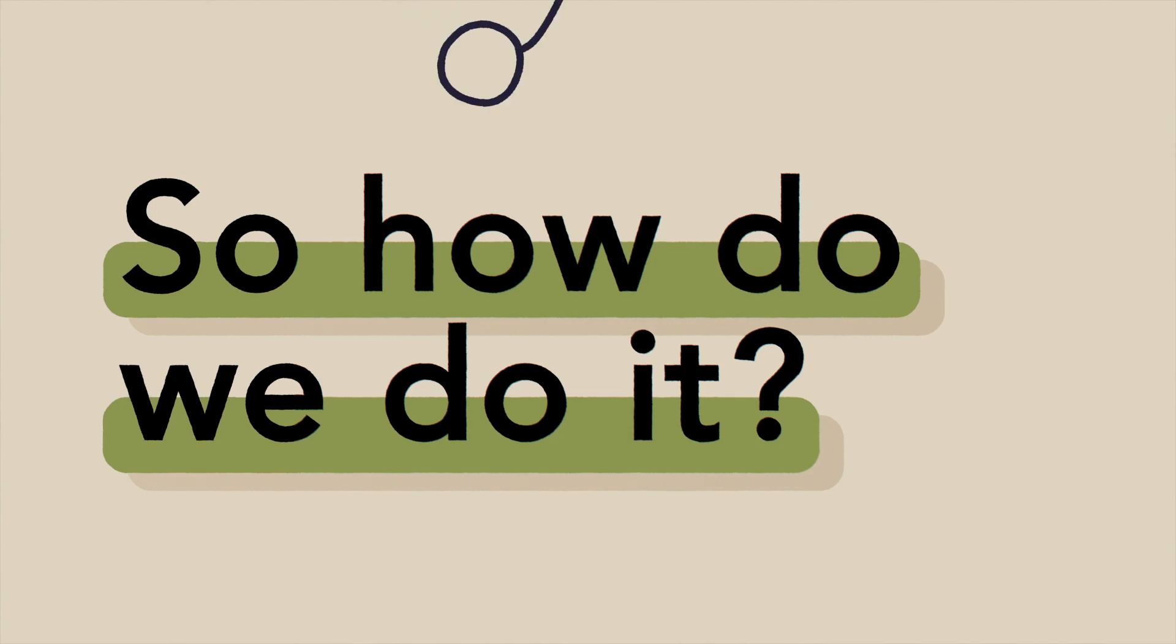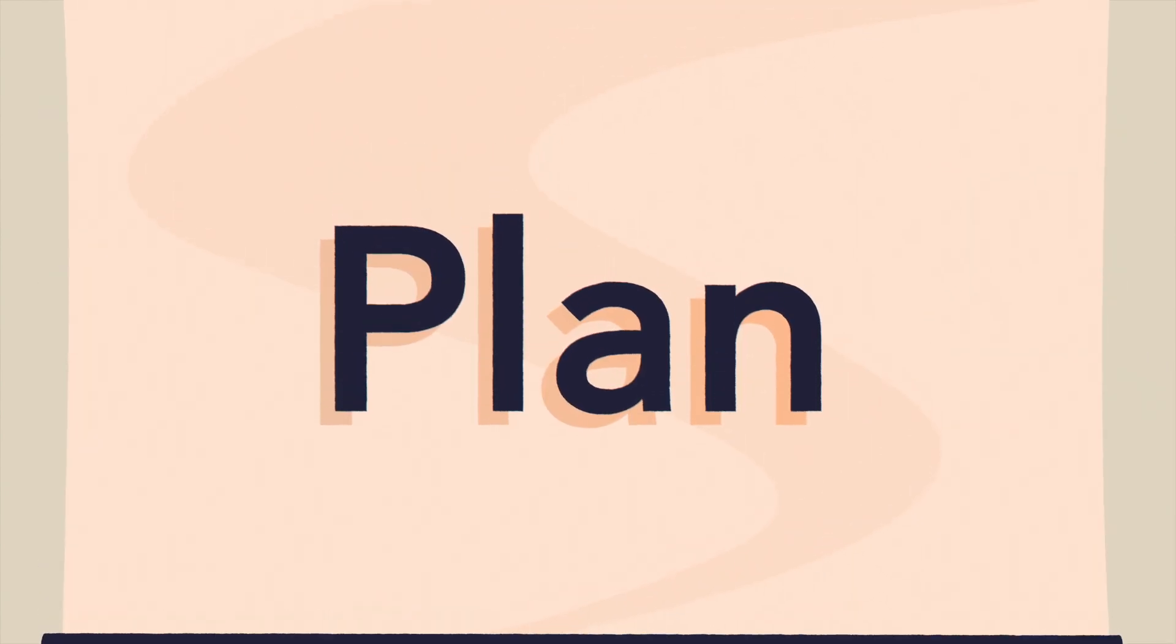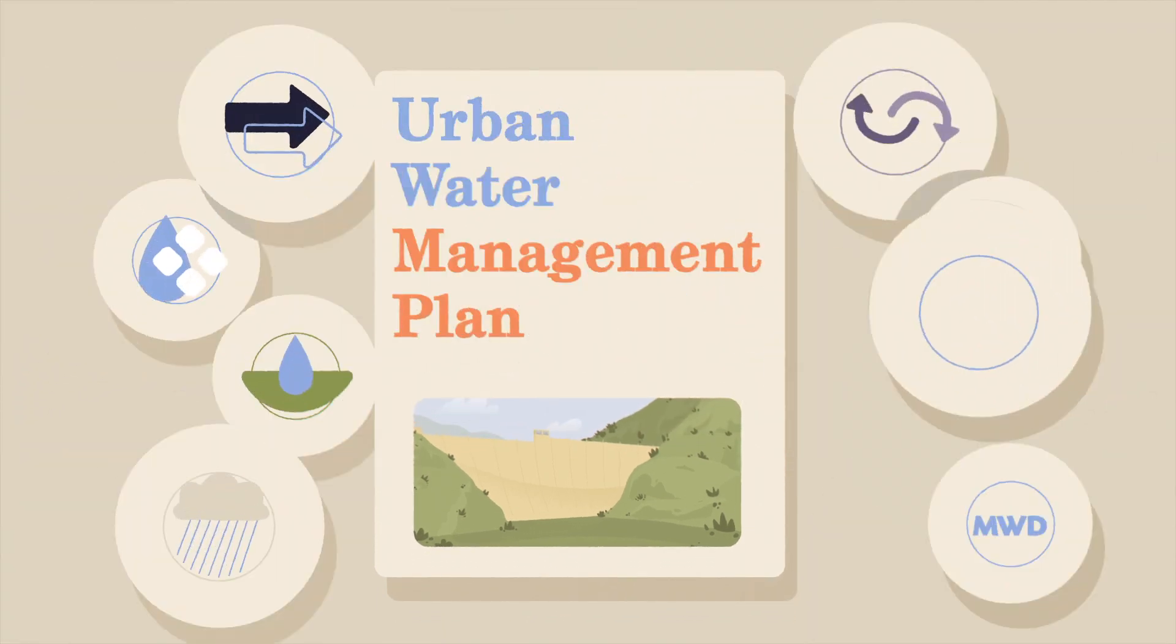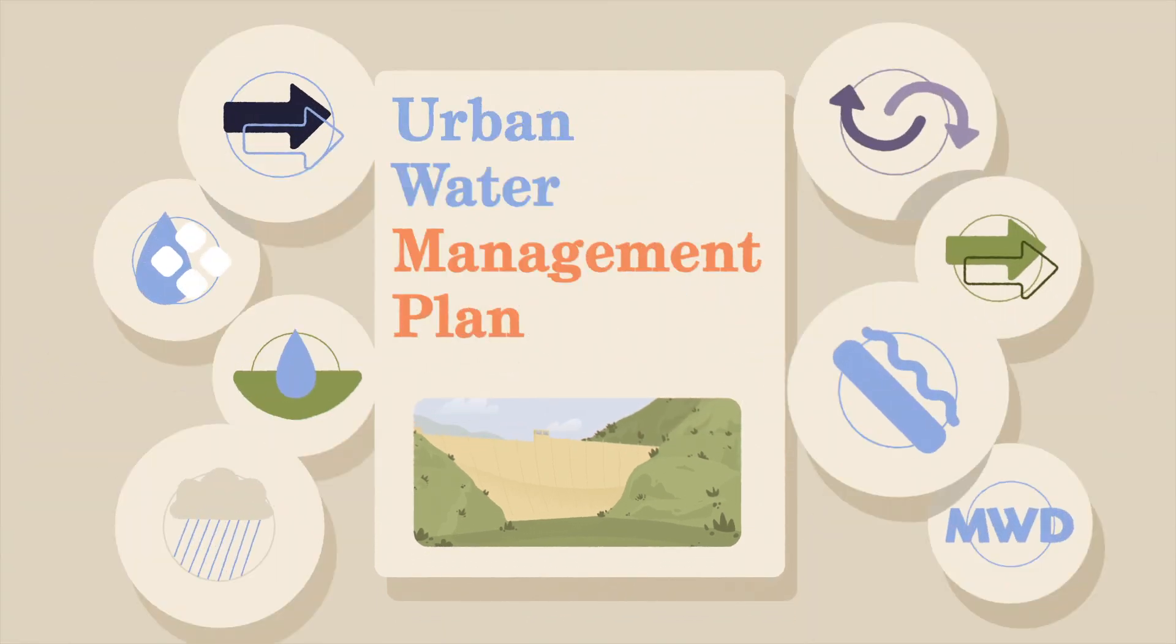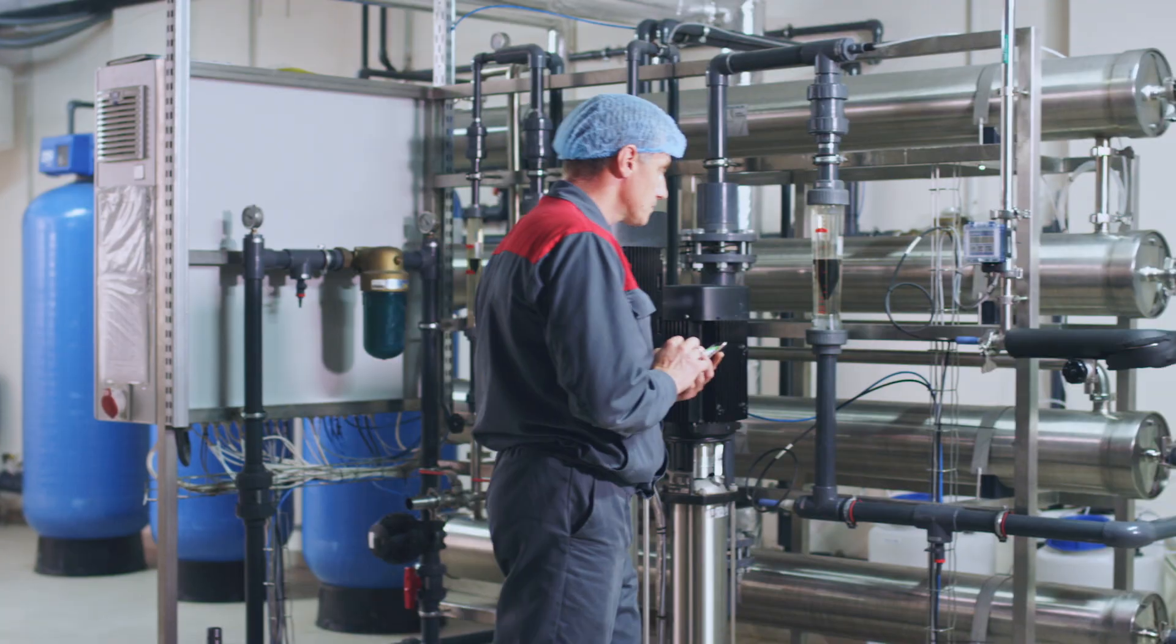So, how do we do it? Like all good things, it starts with a plan. Meet the Urban Water Management Plan. It's a foundational document that identifies the water supplies necessary to meet our region's water needs now and in the future.